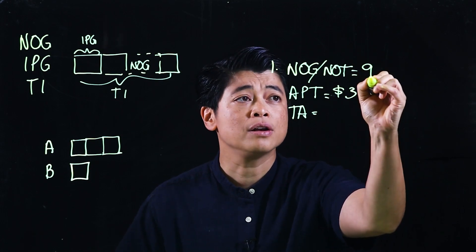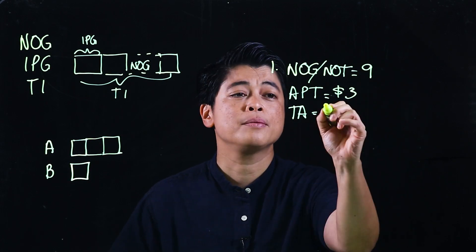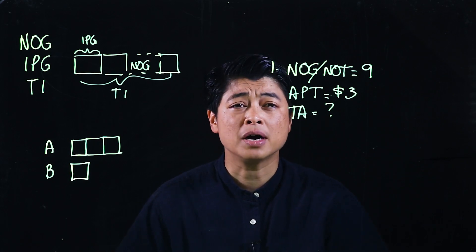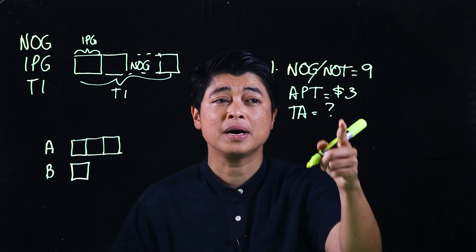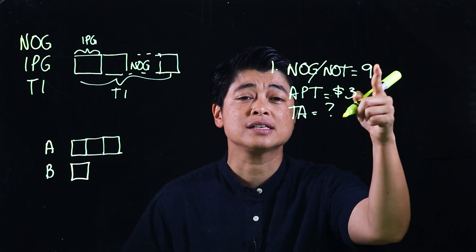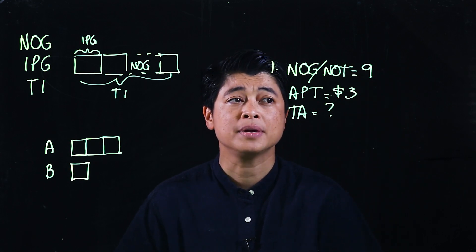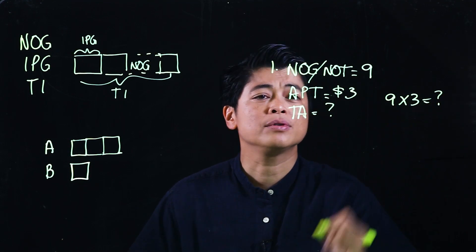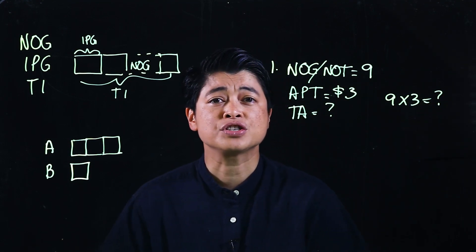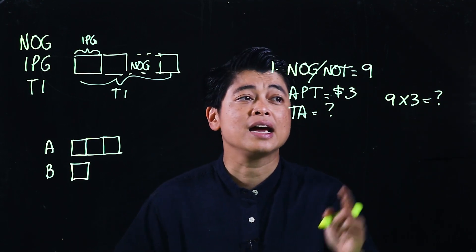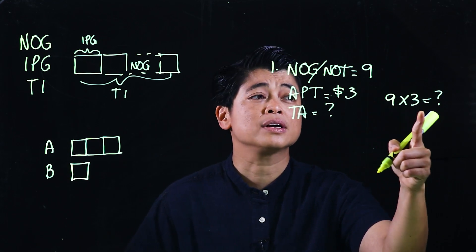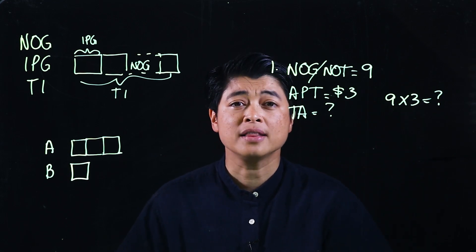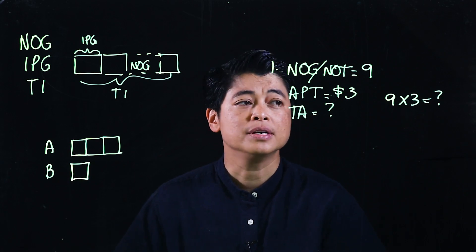There are nine loaves and the question is how much does he pay. We don't really need a bar model here because the setup lets us see this is a multiplication problem. The equation is nine times three equals question mark. Kids can use tables of nines or tables of threes — whatever they're most comfortable with.